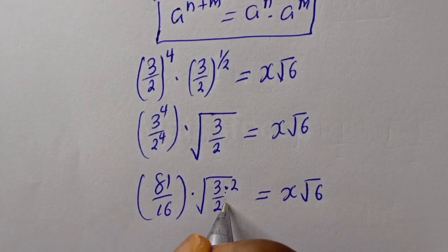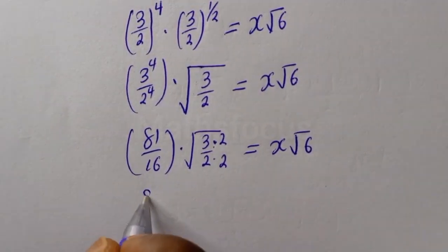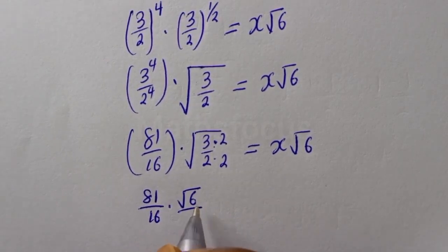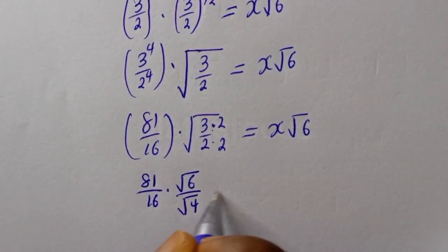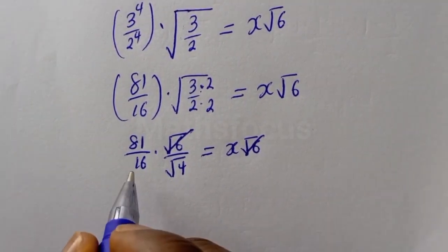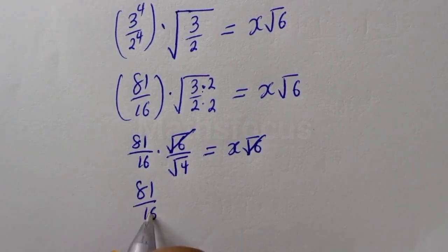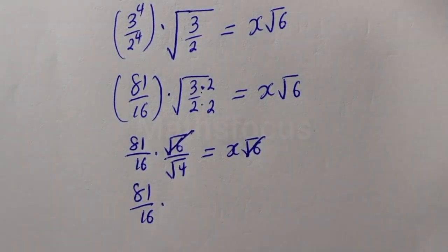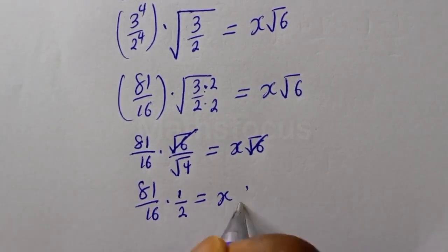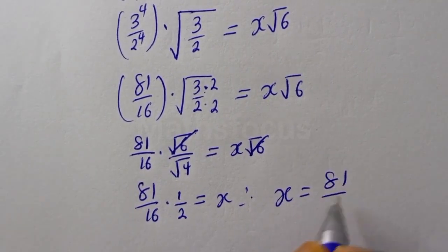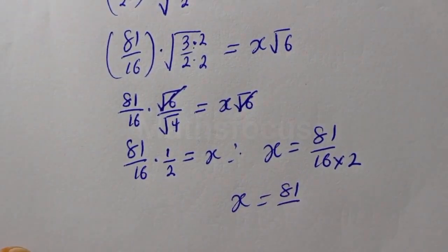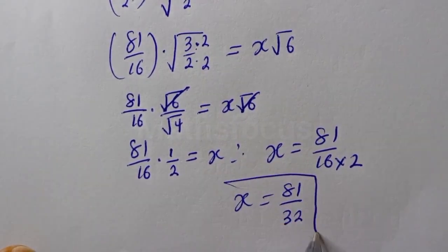Multiply numerator and denominator by 2. We have 81 over 16 multiplied by square root of 6 over square root of 4, equal to s root 6. The root 6 will cancel. We have 81 over 16 multiplied by 1 over square root of 4, which is 2. Therefore, s is equal to 81 over 16 times 2, that is 32. And this is the final answer.